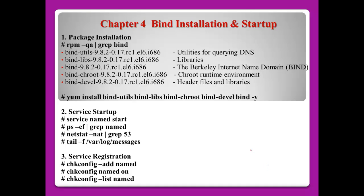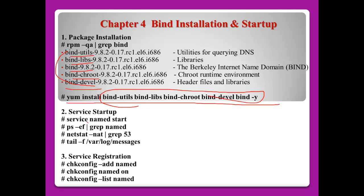Chapter 4: BIND installation. To set up a DNS server using BIND, you need these packages: bind-utils, bind-libs, bind, bind-chroot, and bind-devel. If you don't have these packages, install them using the yum install command. After that, start the service, check the process, and check the port number — DNS normally uses port 53. To check if named started using the log file, use the command: tail -f /var/log/messages. To register the service at each run level, use the chkconfig command.